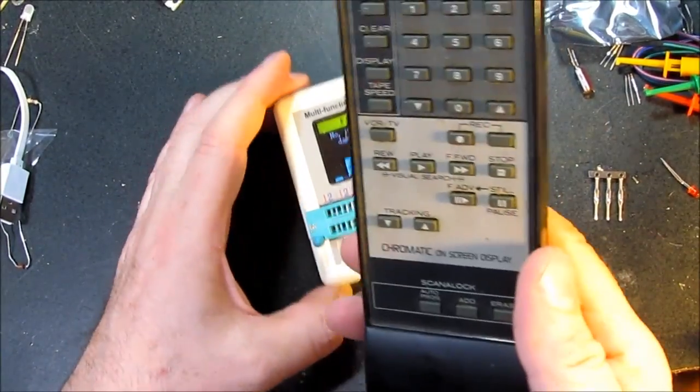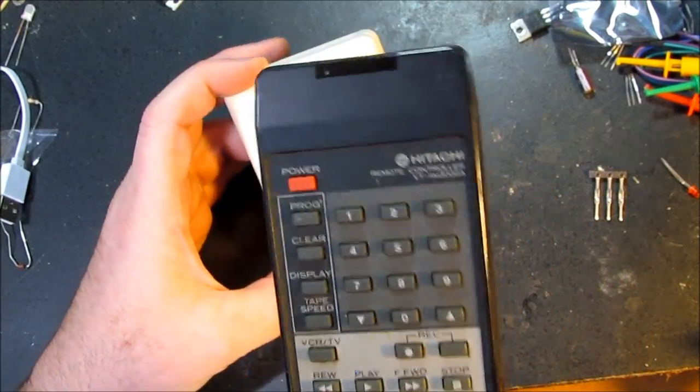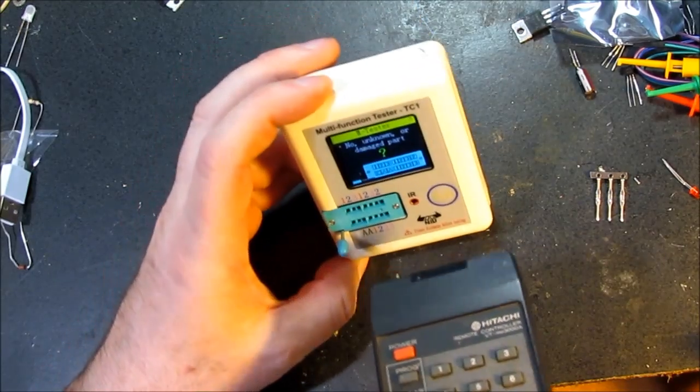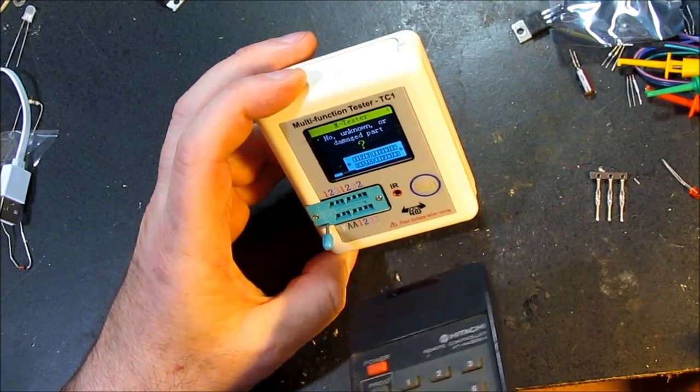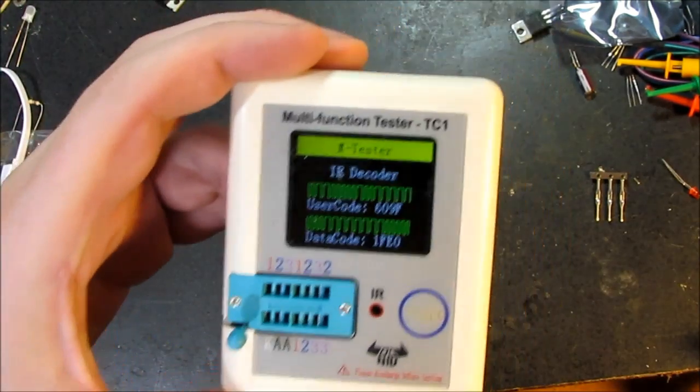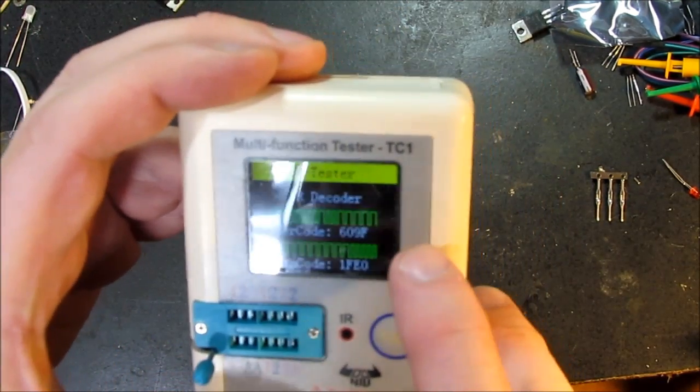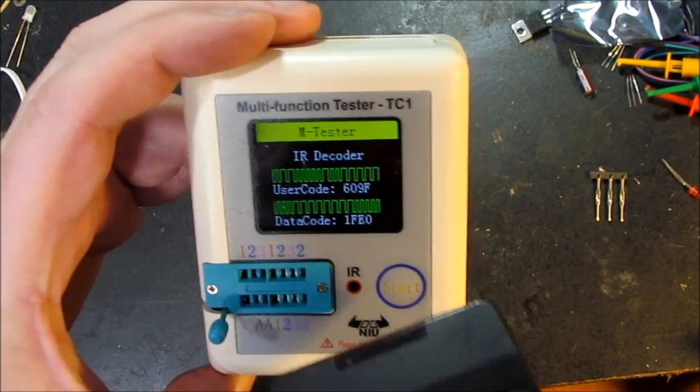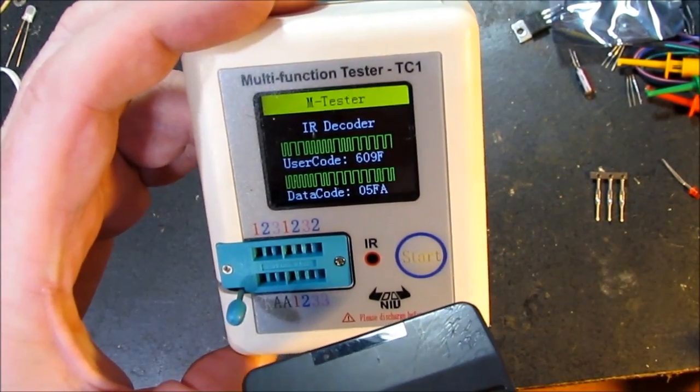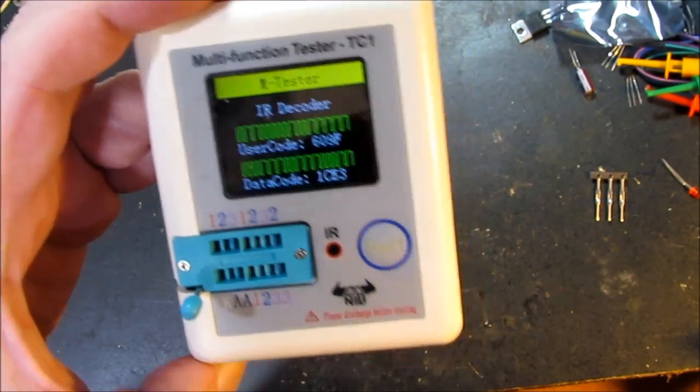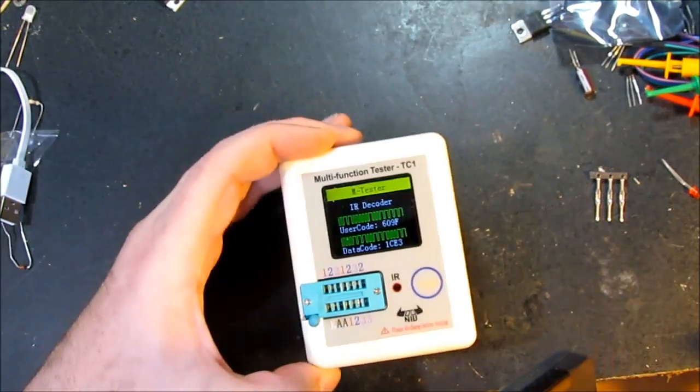All right. A little more careful reading of the instructions says that it only works with Hitachi remote. So I went and grabbed my box of remotes and give this one a try. Yes. No. Oh, there we go. IR decoder user code. Oh, 609F data code 1FE0. Or if I push a different button, 05FA. Okay. So I can decode the different buttons on a Hitachi. That's pretty cool.